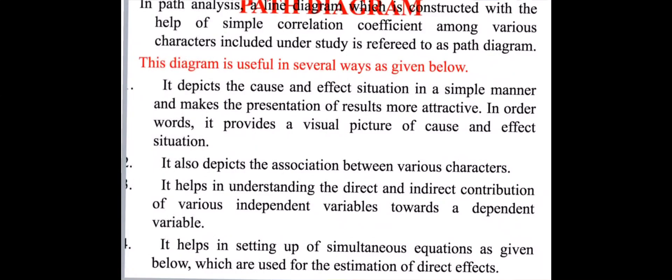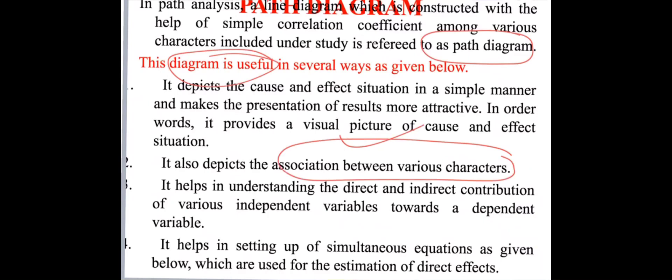In path analysis, a line diagram constructed with the help of simple correlation coefficients among various characters included under the study is known as a path diagram. This diagram gives a visual picture of the cause-and-effect situation, making the presentation of results more attractive. It also gives information about the association between characters and helps in understanding the direct and indirect contribution of various independent variables towards the dependent one, as well as in solving simultaneous equations for estimation of direct, indirect, and residual effects.